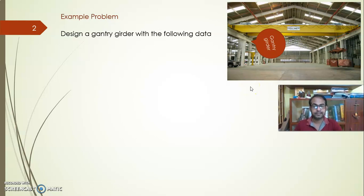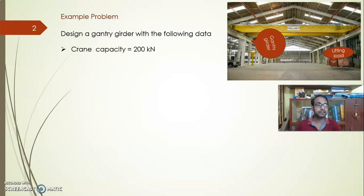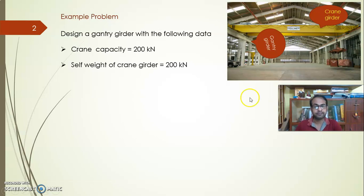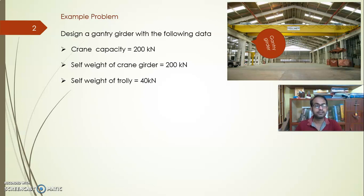The first data is the capacity of the crane, which is 200 kilonewtons — this represents the lifting load that can be pulled with the help of the crab unit provided with the hook and chain pulley. The next data is the self-weight of the crane girder, which is given as 200 kilonewtons.